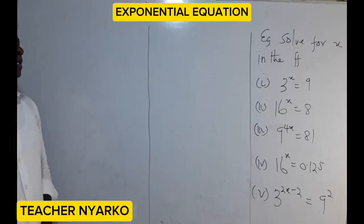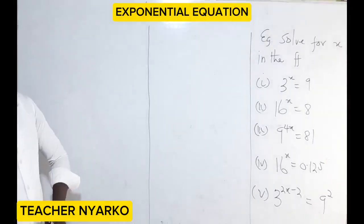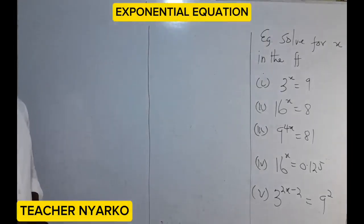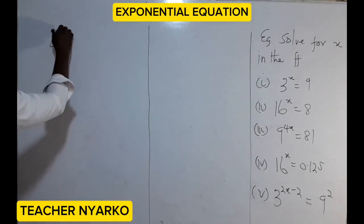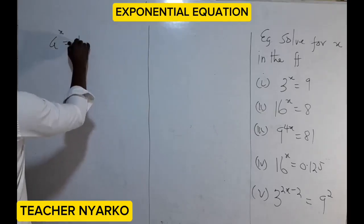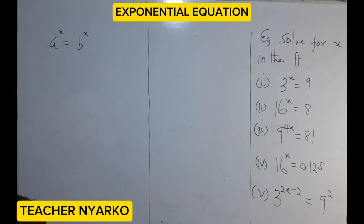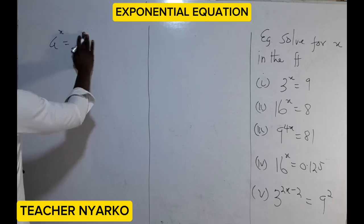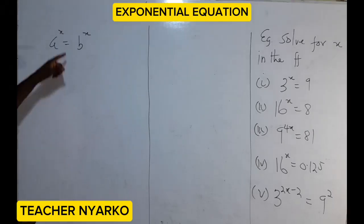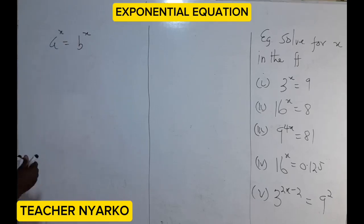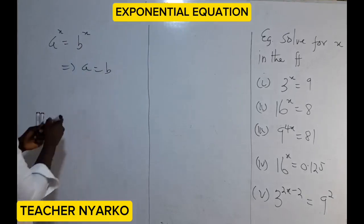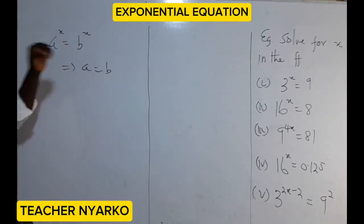We are going to look at exponential equations. An exponential equation is any equation that involves an unknown quantity with an exponent or an index. The general idea is: if you have a exponent x equals b exponent x, the exponents are the same — that means a is equal to b. We can equate the bases. So when the exponents are the same, we can equate the bases.